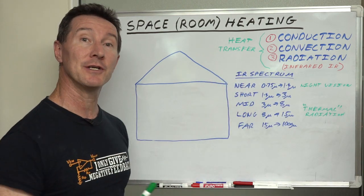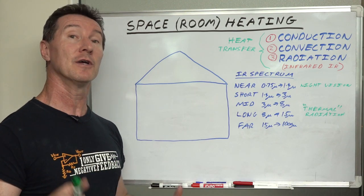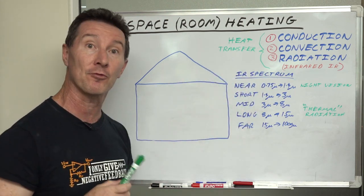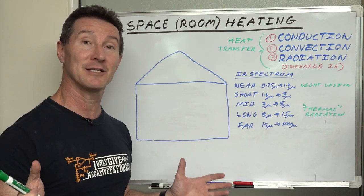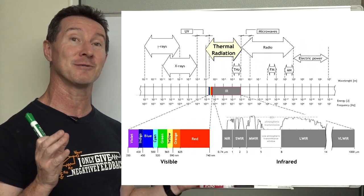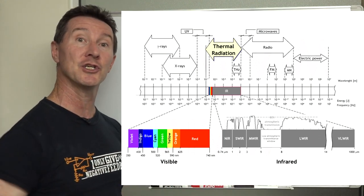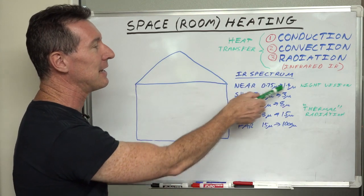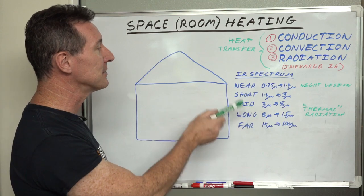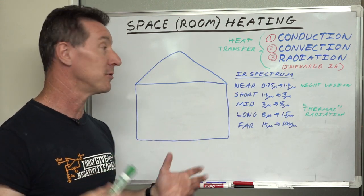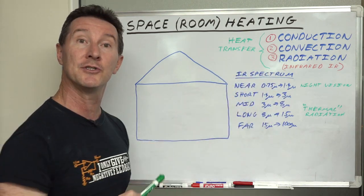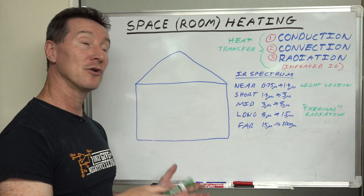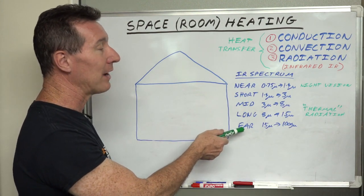Now, infrared radiation doesn't need a medium to transfer through. All the heat energy from the sun comes as radiation - in this case, infrared radiation - just like any other type of electromagnetic spectrum radiation. Looking at the EM spectrum, part of it is infrared radiation, broken down into many different types with wavelengths in micrometers. You might hear near-infrared, used for night vision goggles, up to about 1,000 nanometers or one micrometer wavelength. Then there's short-wavelength, mid, long, and far-infrared.